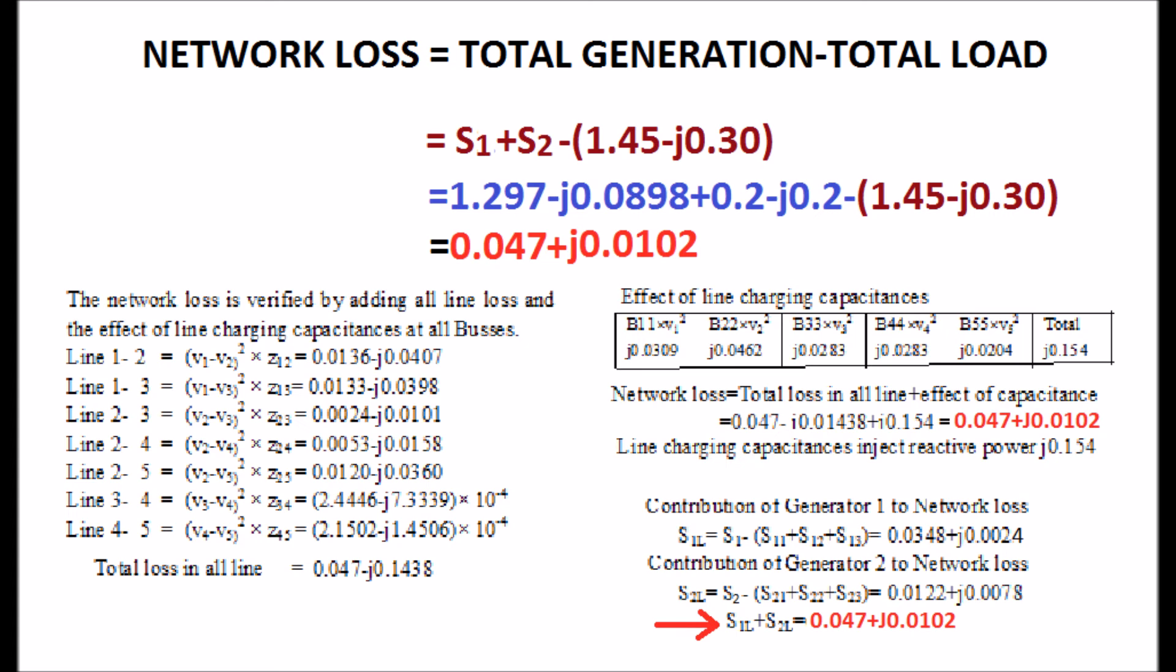When the contribution of generator 1 to network loss is added with the contribution of generator 2 to network loss, we get the total network loss. The loss is also shown in the display in red color.